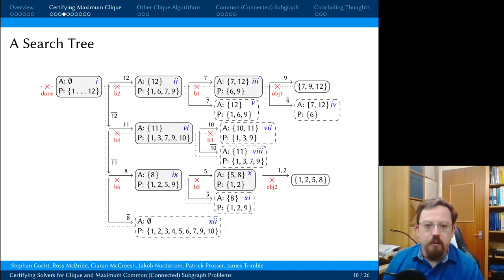Then we'd run a solver which would produce a search tree that looks something like this. I'll not go into details, just to say that we find at the top right an early incumbent with 3 vertices, vertices 7, 9, and 12, and then later on we find a stronger incumbent with 4 vertices, 1, 2, 5, and 8, and eventually we determine there's nothing bigger.